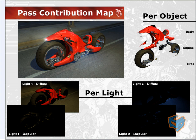The pass contribution map is a tool designed to allow you to determine which lights or objects you want to contribute to the final render pass. For example, looking at my image here, I output the parts of the bike by itself — the body, the engine, the tires — rendered out by themselves as a beauty pass. You can also do matte or spec per object, and you can output it per light as well. I had two lights in the scene: light one diffuse, light one spec, light two diffuse, and light two spec. This opens a wide range of possibilities for better control over your final image in the compositing phase.